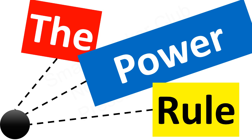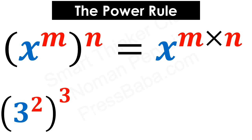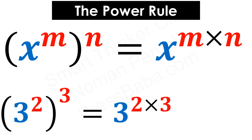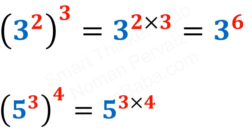Our next topic is the power rule. The power rule states that if we have x raised to the power m, whole raised to the power n, it becomes x raised to the power m multiplied by n — the powers are multiplied. For example, 3 raised to the power 2 whole power 3 becomes 3 raised to the power 2 multiplied by 3, which is 6, giving 3 raised to the power 6. Another example: 5 raised to the power 3 whole power 4 becomes 5 raised to the power 3 multiplied by 4, which is 12, giving 5 raised to the power 12.